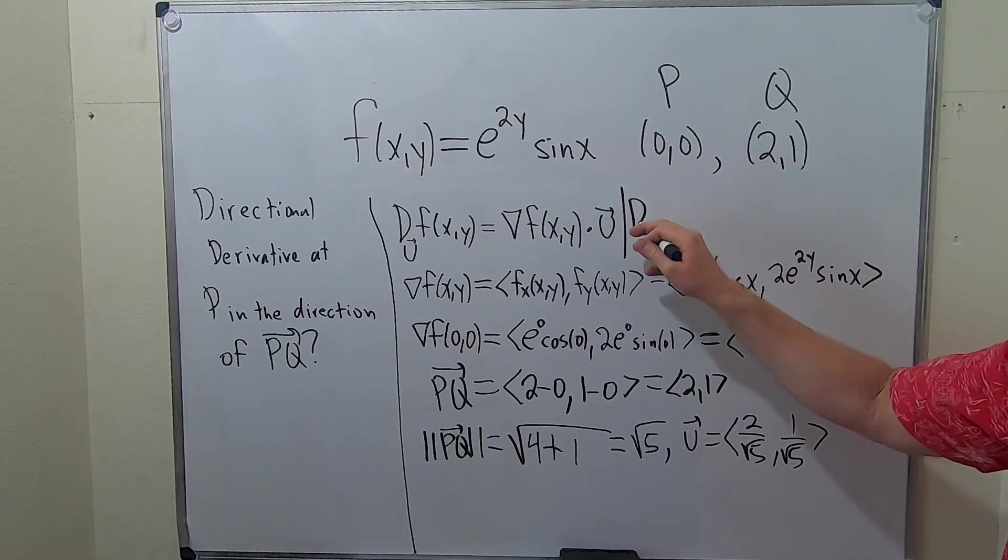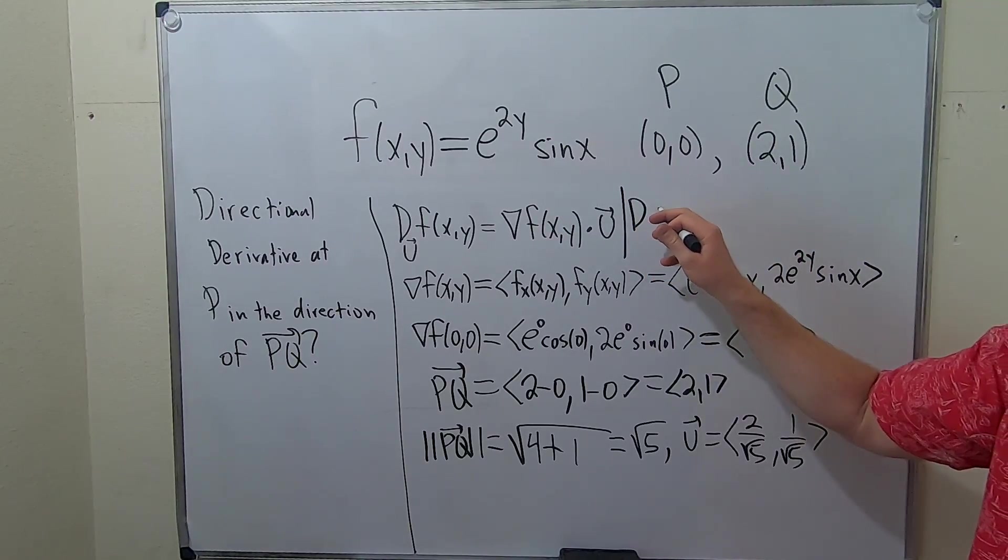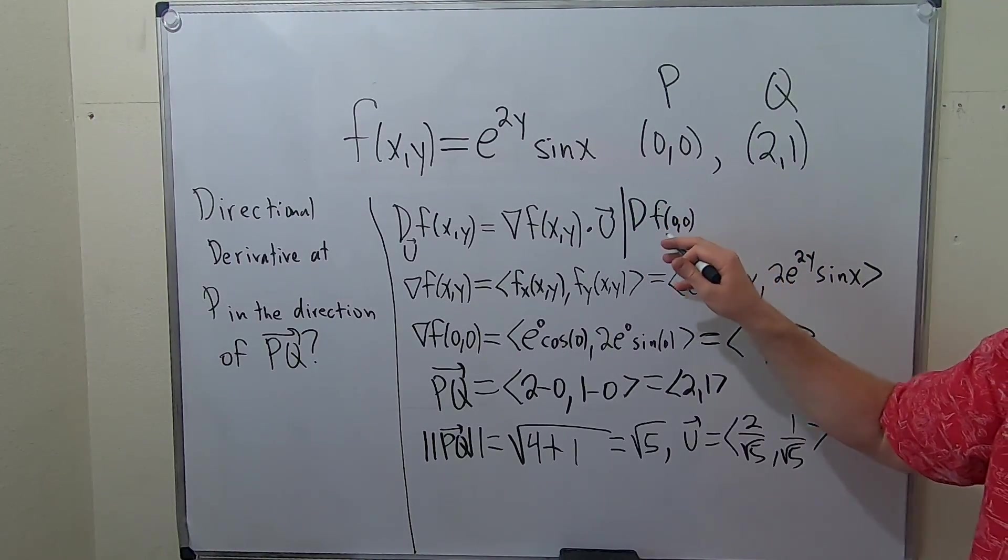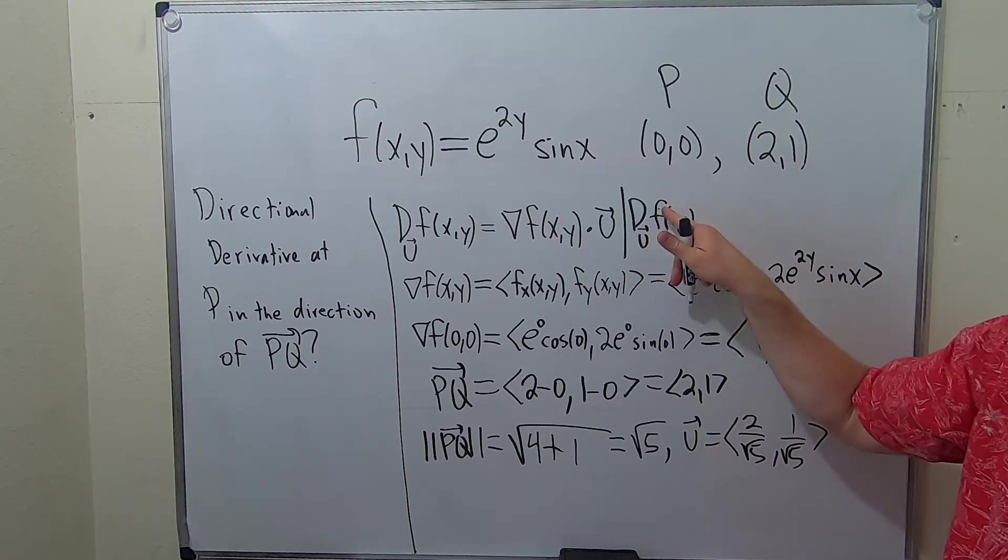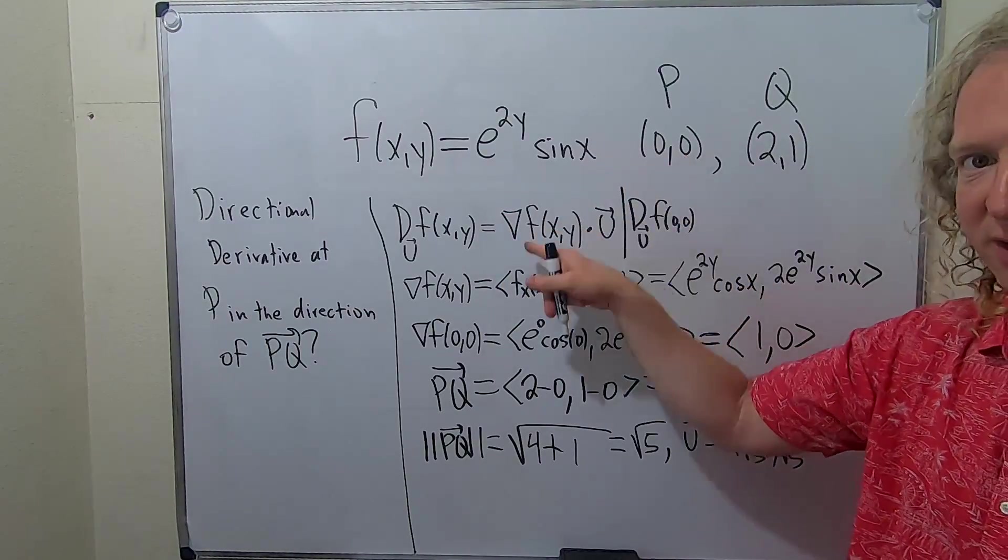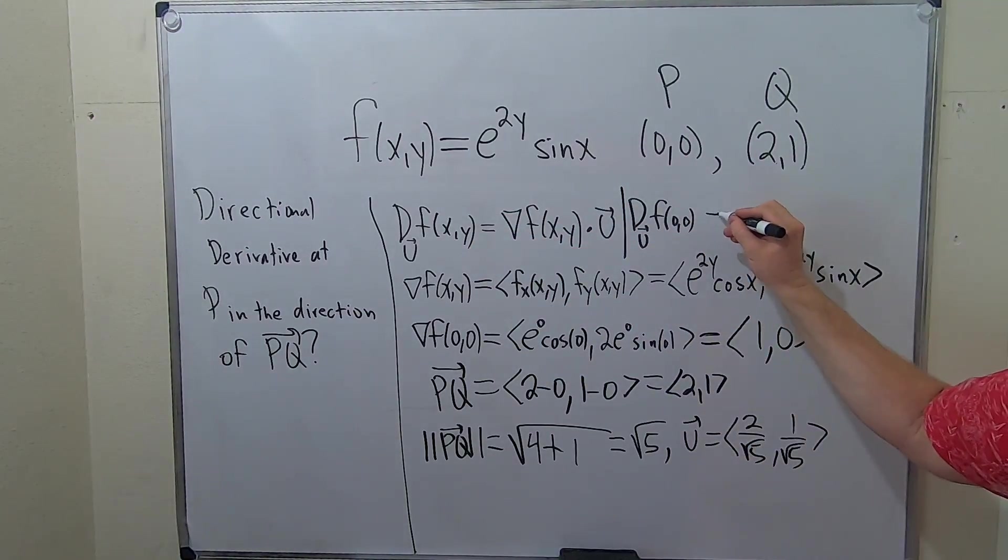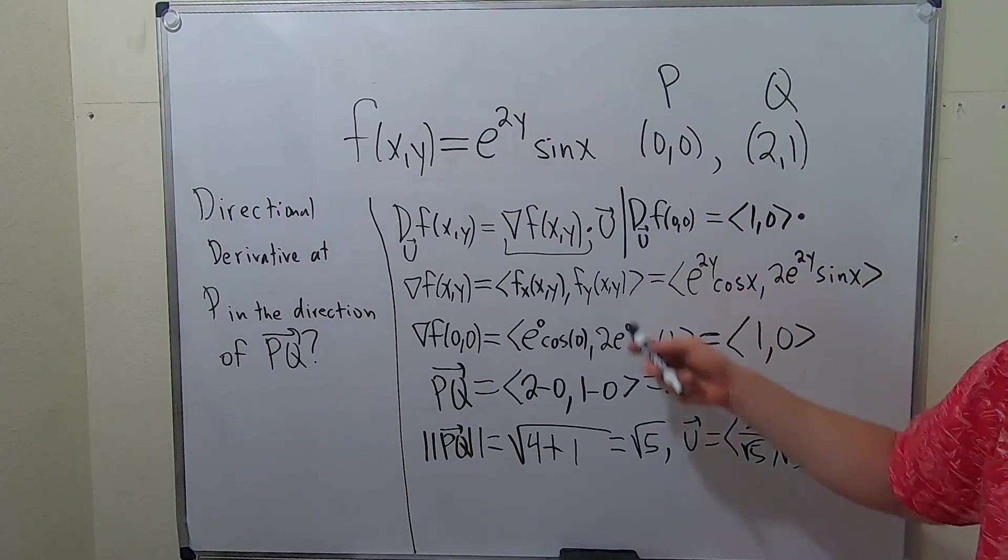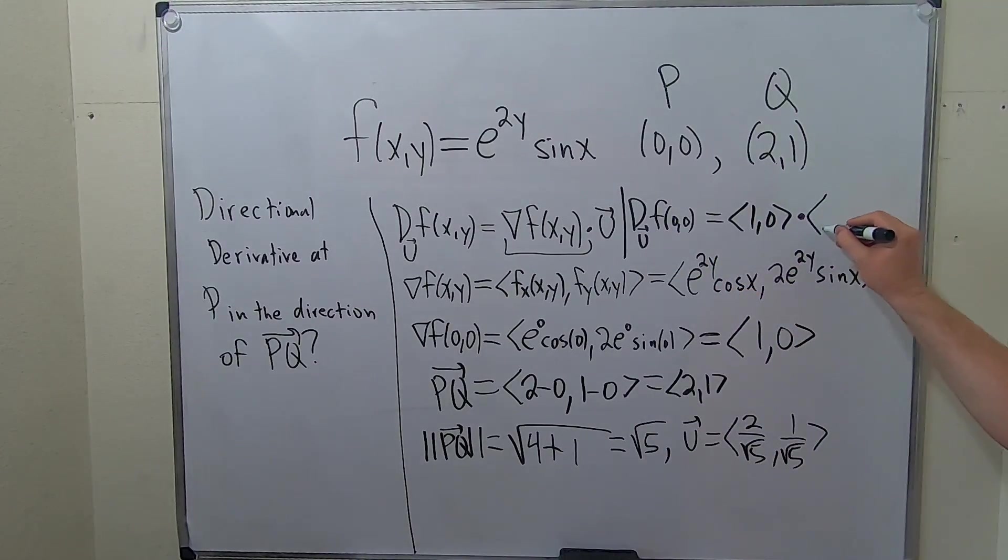The directional derivative of F at 0, 0 in the direction of U. Notice the notation is very delicate. Now we're plugging in the 0, 0. Using this formula, it's going to be this. Well, we worked this out already. We said it was 1, 0. So, this is 1, 0, dot. And then our unit vector is this. So, dotted with 2 over root 5 and then 1 over root 5.